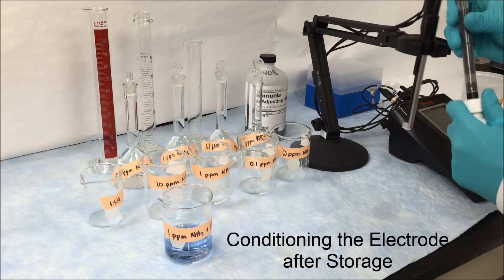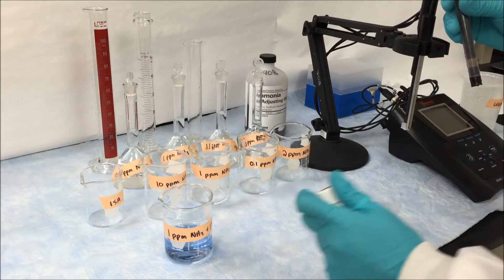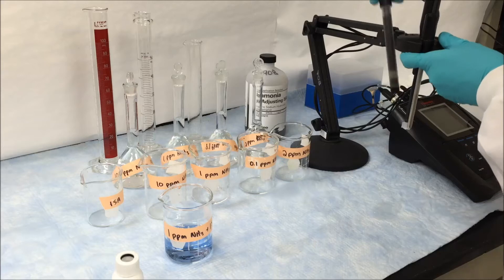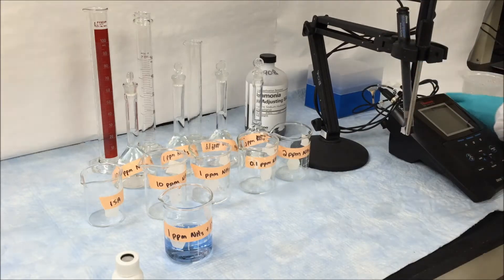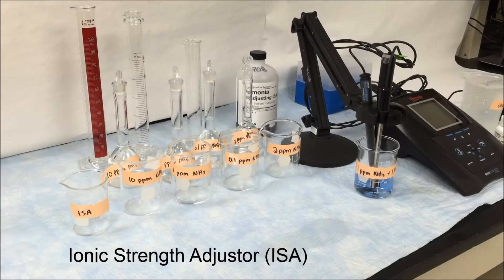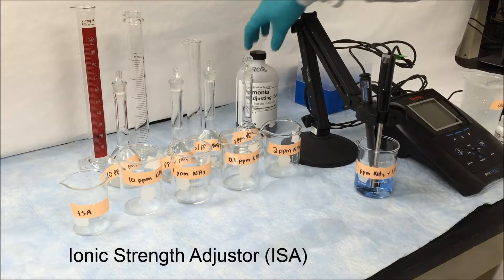First take the electrode out of the storage solution making sure not to create a vacuum. We suggest that you place your ammonia electrode in your mid-level standard with ISA for about 10 to 15 minutes before you start to perform your calibration.